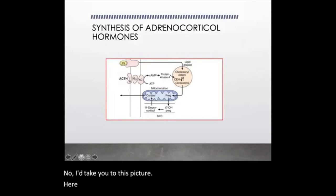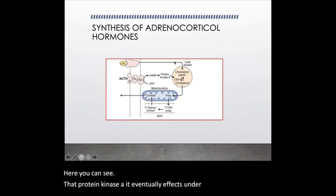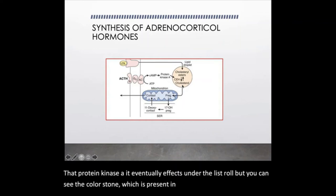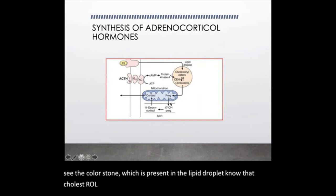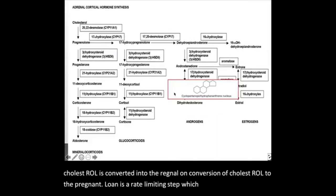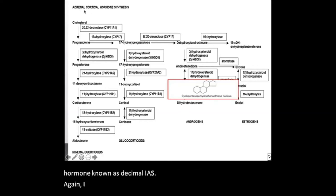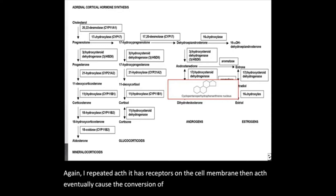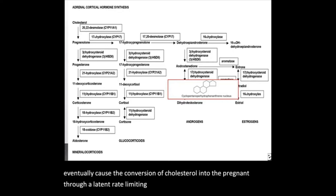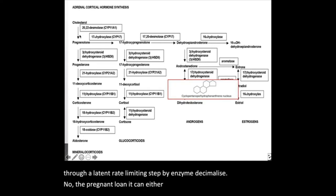Protein kinase A eventually has effects on cholesterol, which is present in the lipid droplet. That cholesterol is converted into pregnenolone. The conversion of cholesterol to pregnenolone is a rate-limiting step which is determined by the enzyme desmolase. ACTH causes the conversion of cholesterol into pregnenolone through this rate-limiting step by desmolase.